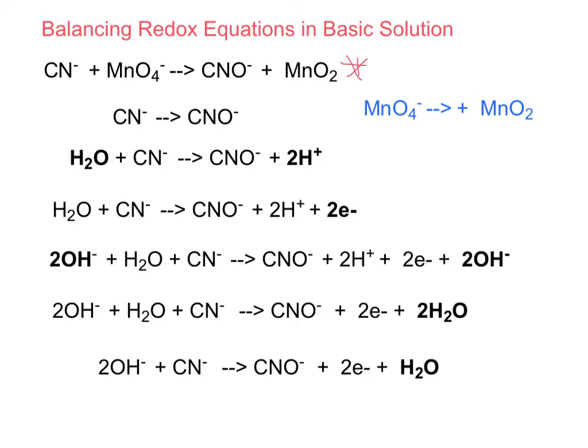Here is our first half reaction, CN- producing CNO-, and here's our second half reaction, MnO4- producing MnO2. Now the first step is to balance all non-hydrogen and oxygens, which are already balanced here.